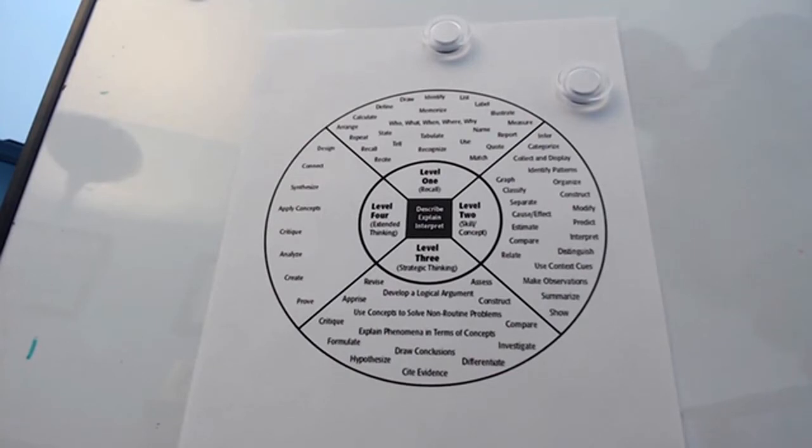Then level three is strategic thinking. Now that they know the declarative information, now that they can do the conditional—now that they know how to do it, do they know when to do it? Can they reflect on if they're successful, strategically think about it? That's level three.